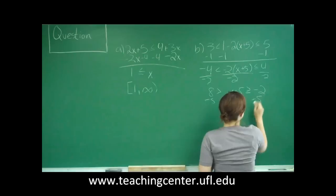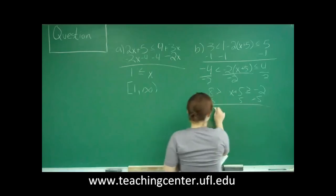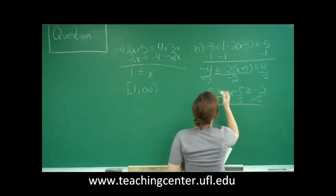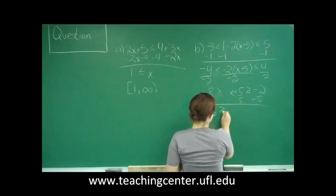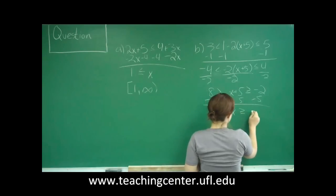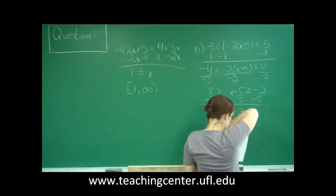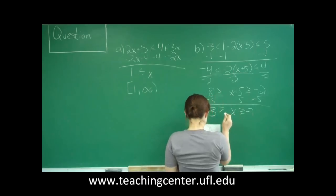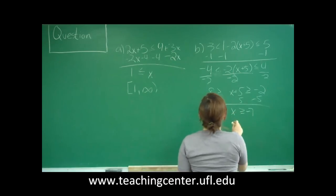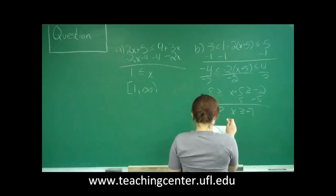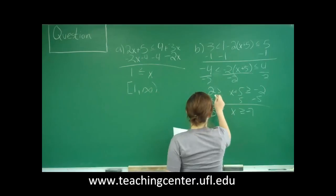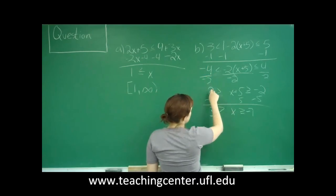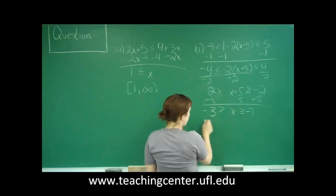So then, sorry, we subtract 5 from every side and we get that 3 is greater than x, which is greater than or equal to 7. So to write this in interval notation, this is negative. This is supposed to be a negative. So negative 4 divided by a negative 2 is 2 minus 5 is negative 3. So we've got negative 3 is greater than x,